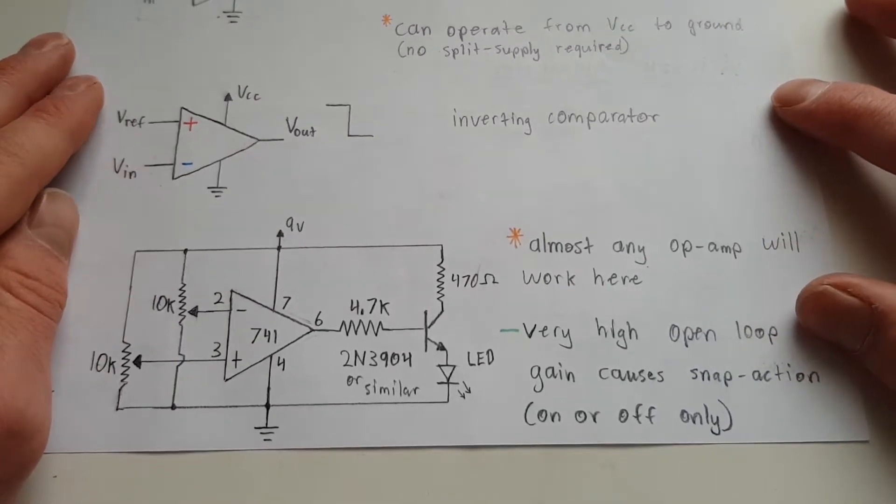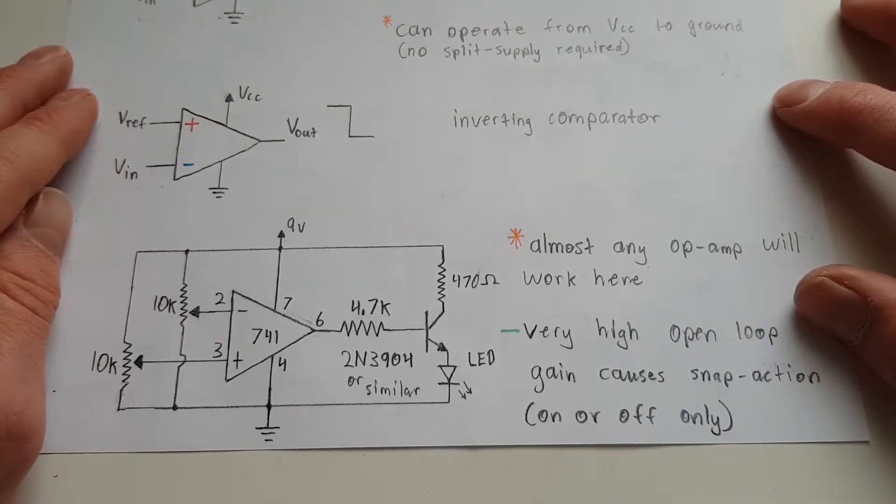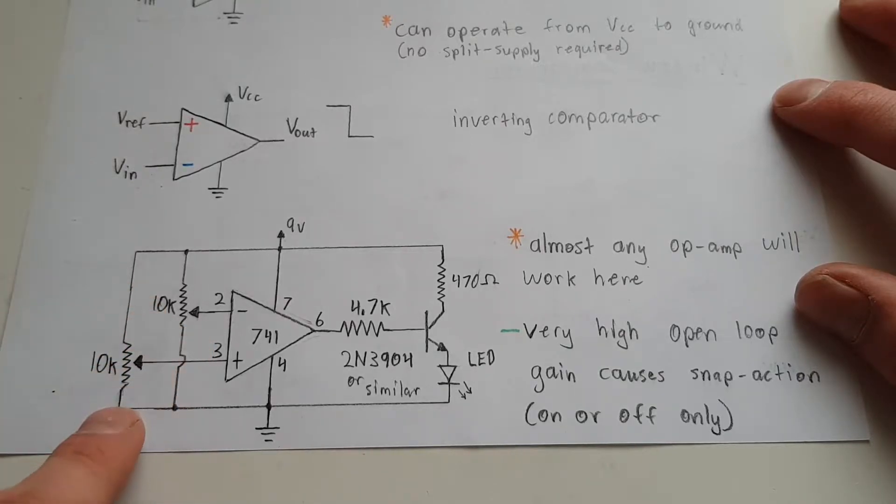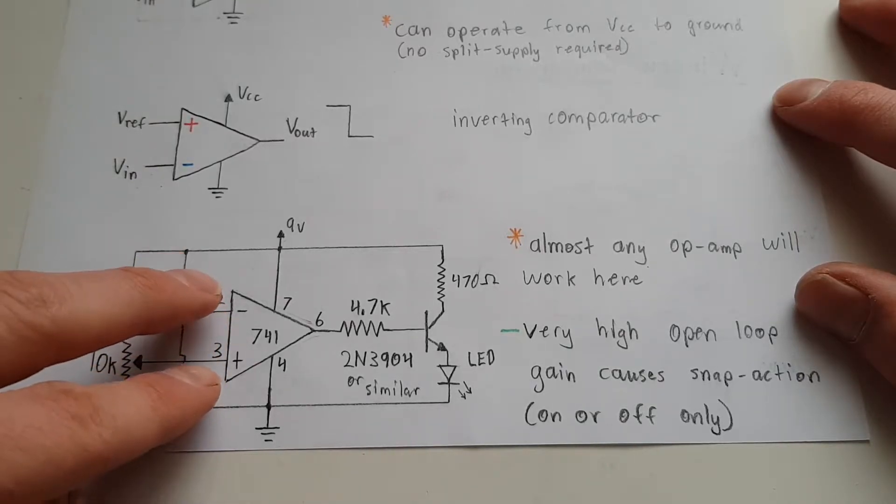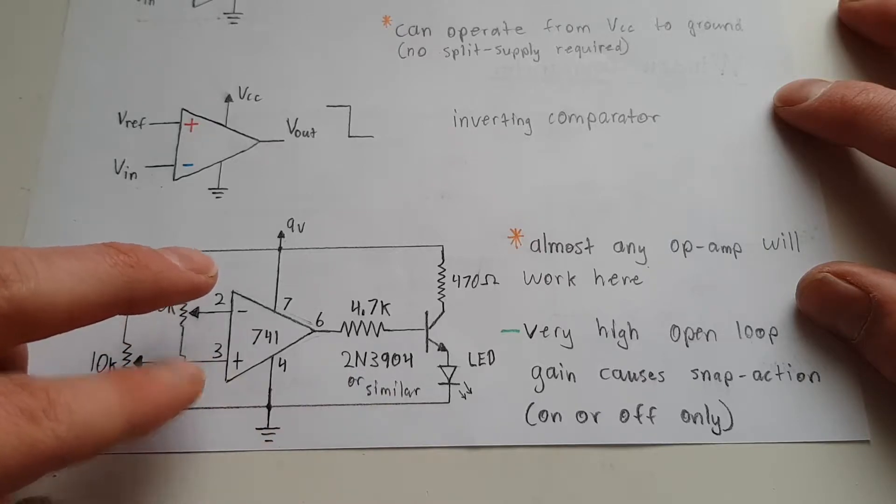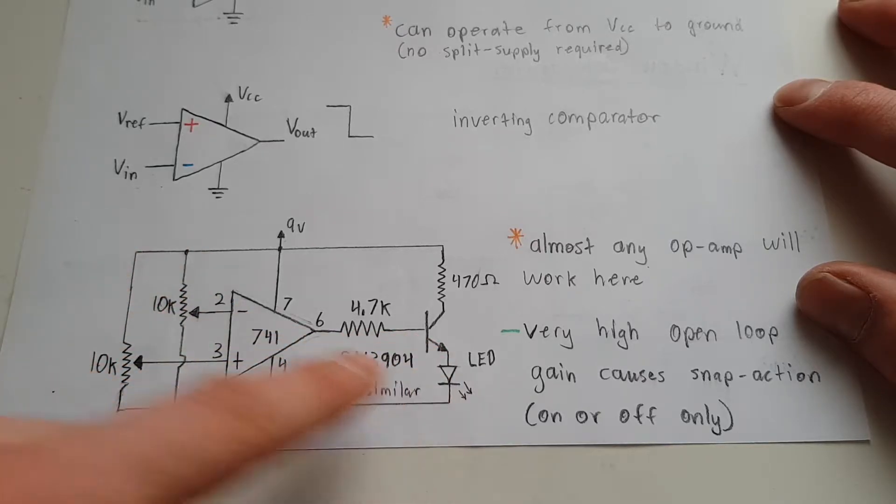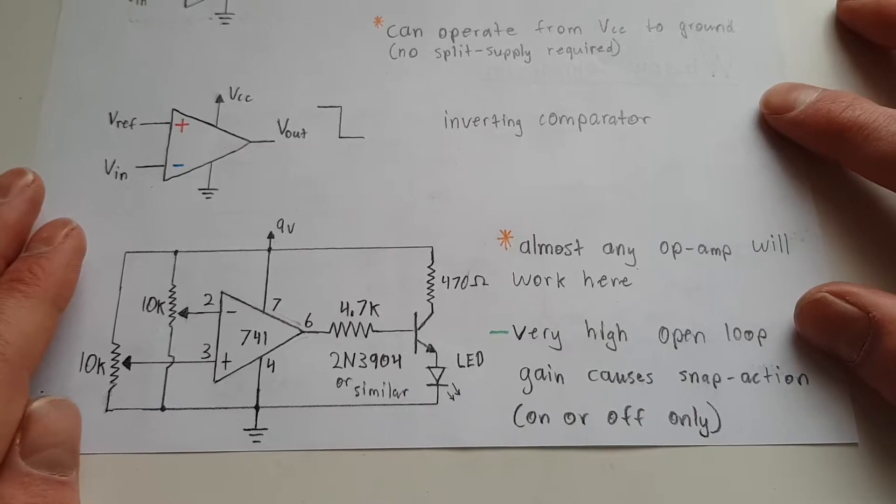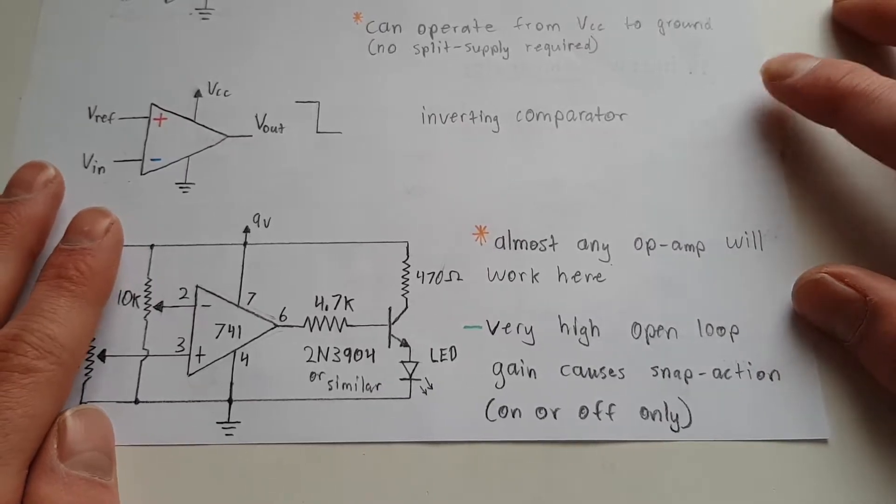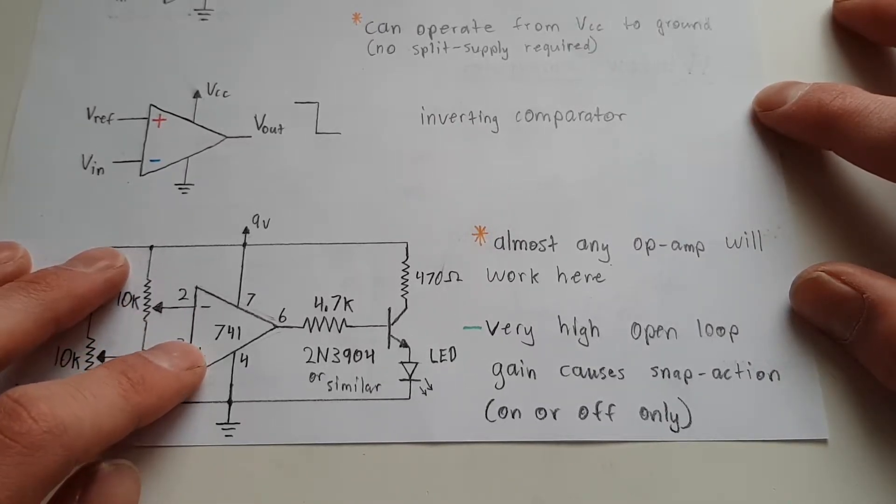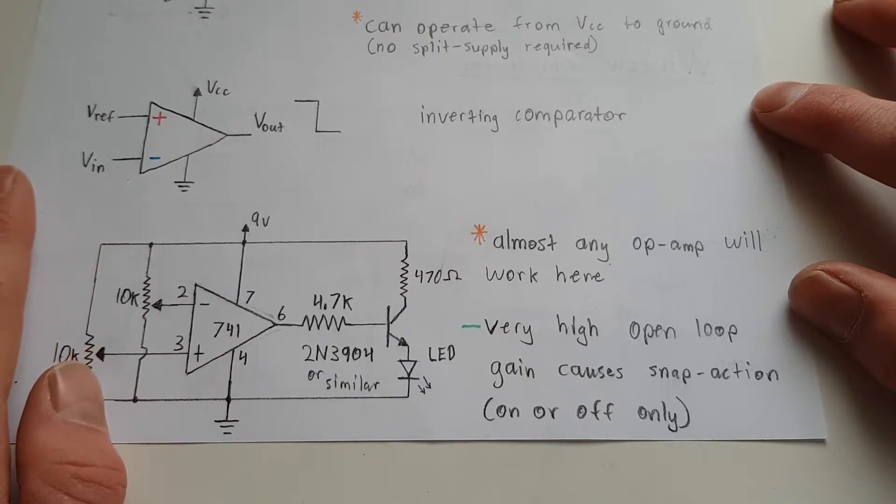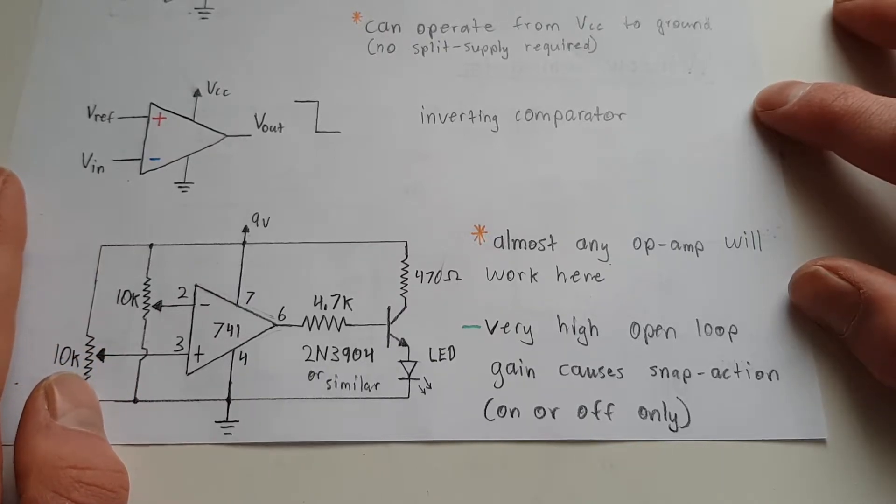This is a basic comparator circuit where you have two potentiometers feeding two different voltages to each pin, and when those voltages change either way, it'll turn the LED on and off. Now the very high loop gain, like I said, these have very high gain inside without any feedback, and that's what causes the snap kind of on-off action.